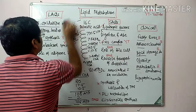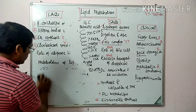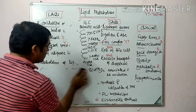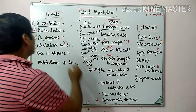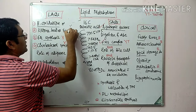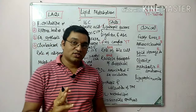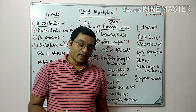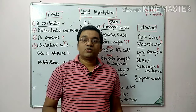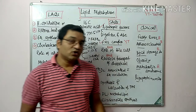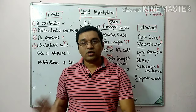The second important question is ketone body synthesis, which is very important in starvation and diabetes mellitus. There are three ketone bodies: acetone, acetoacetate, and beta-hydroxybutyrate. Acetone and acetoacetate are known as true ketone bodies. Beta-hydroxybutyrate does not contain a keto group and is known as a false ketone body, but it accounts for 80% of total ketone bodies.